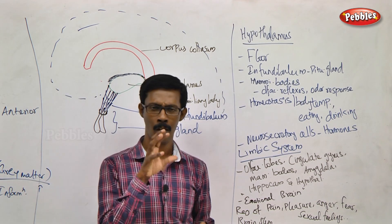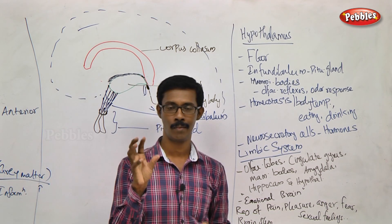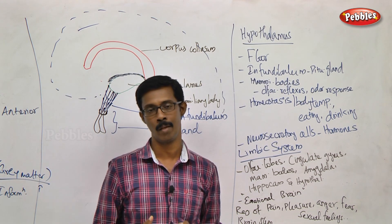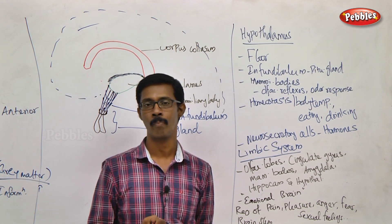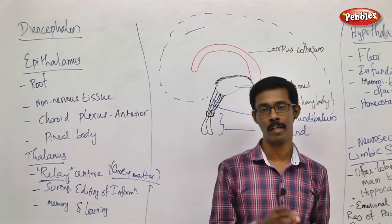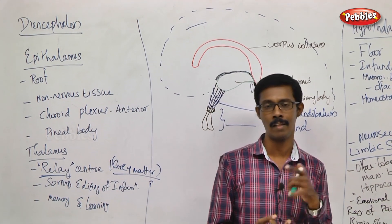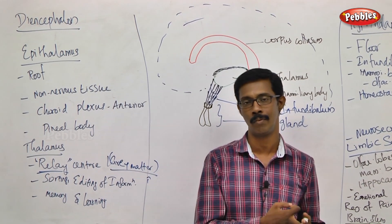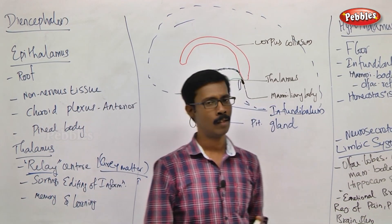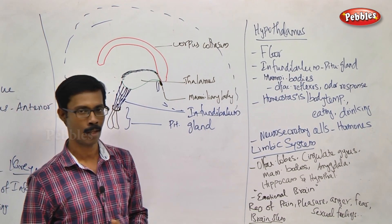To summarize the Diencephalon: starting from the brain's forebrain, the Diencephalon has the epithalamus as the roof, the middle bulky region is the thalamus which is the relay center, and the floor is the hypothalamus which plays the major role in homeostasis.